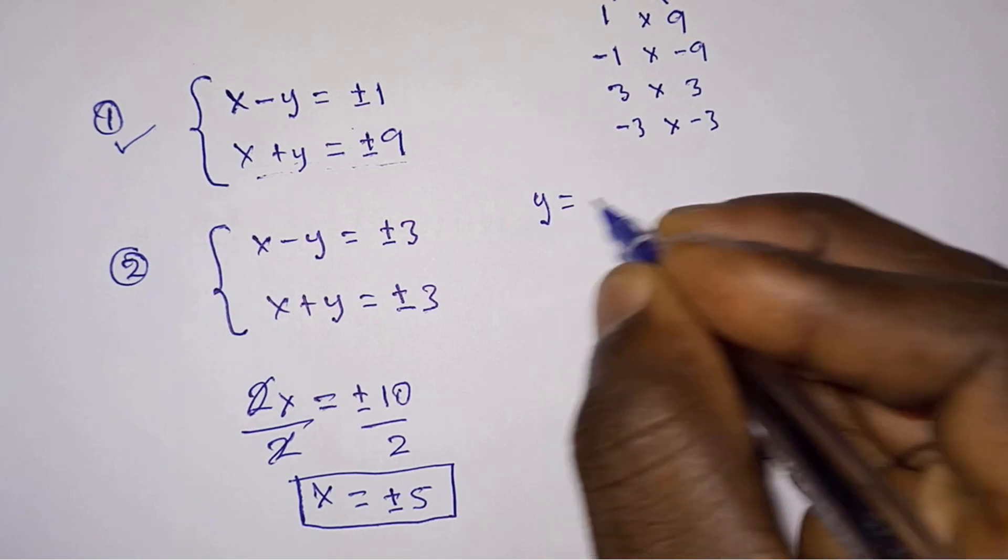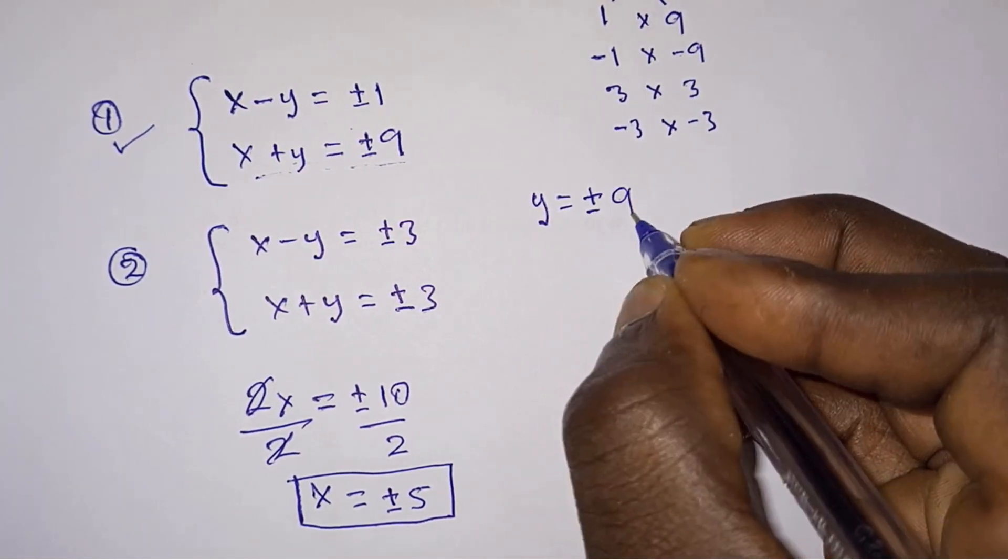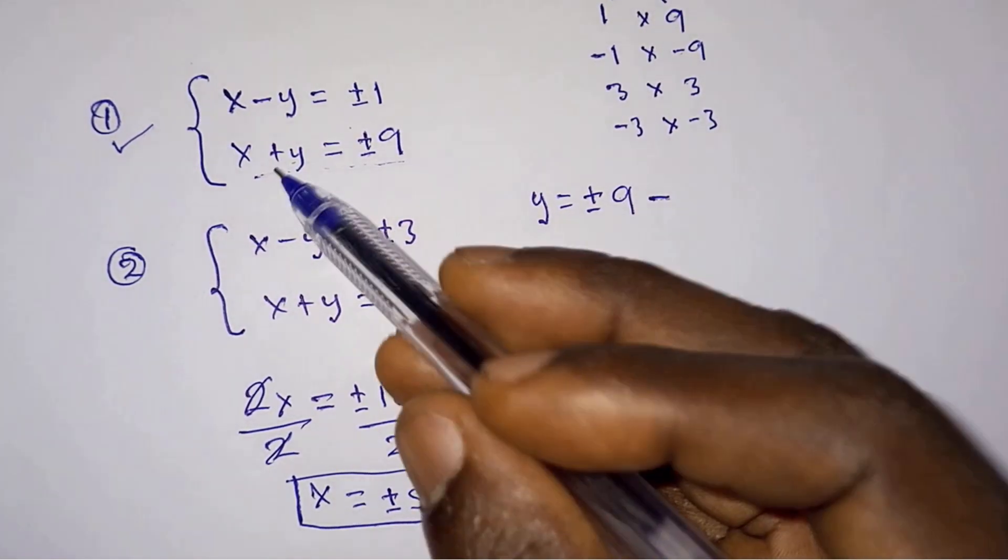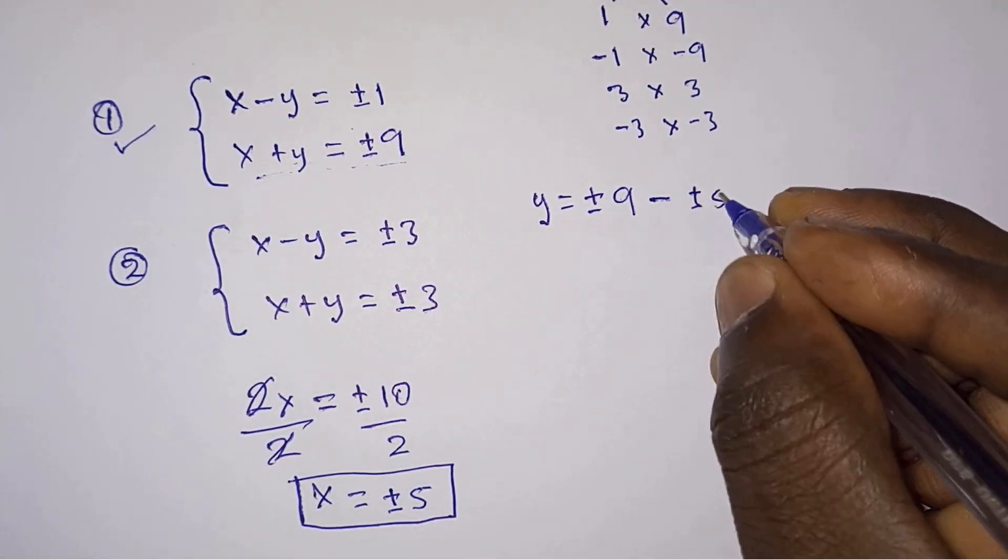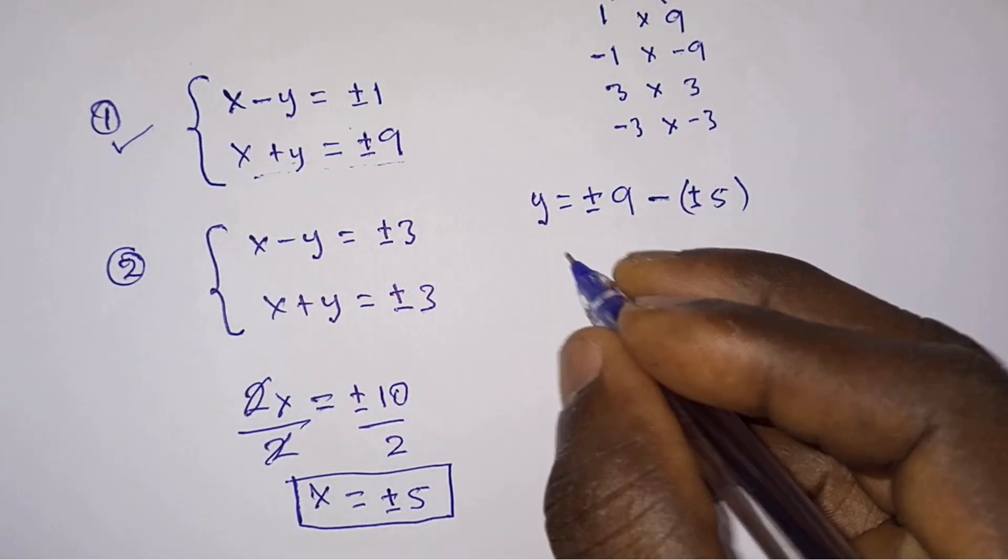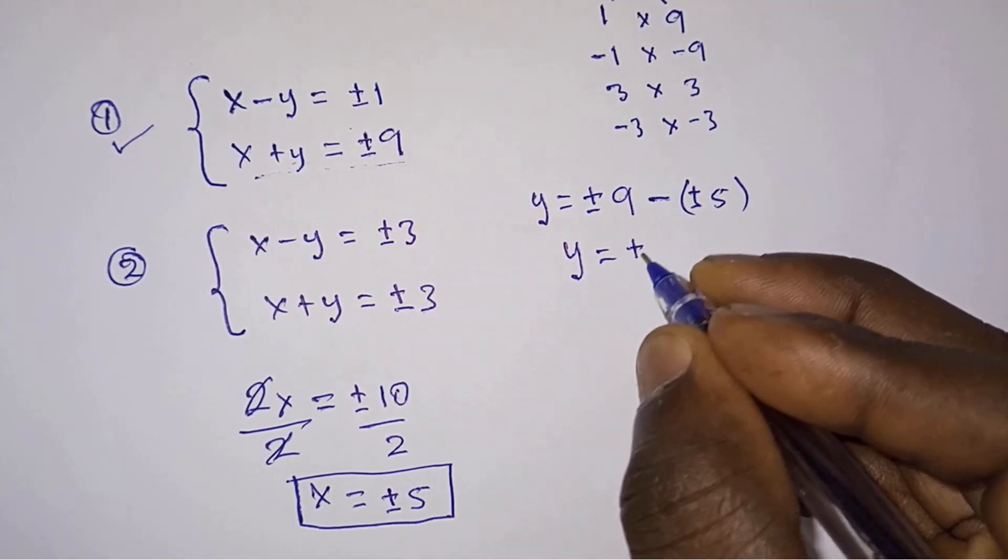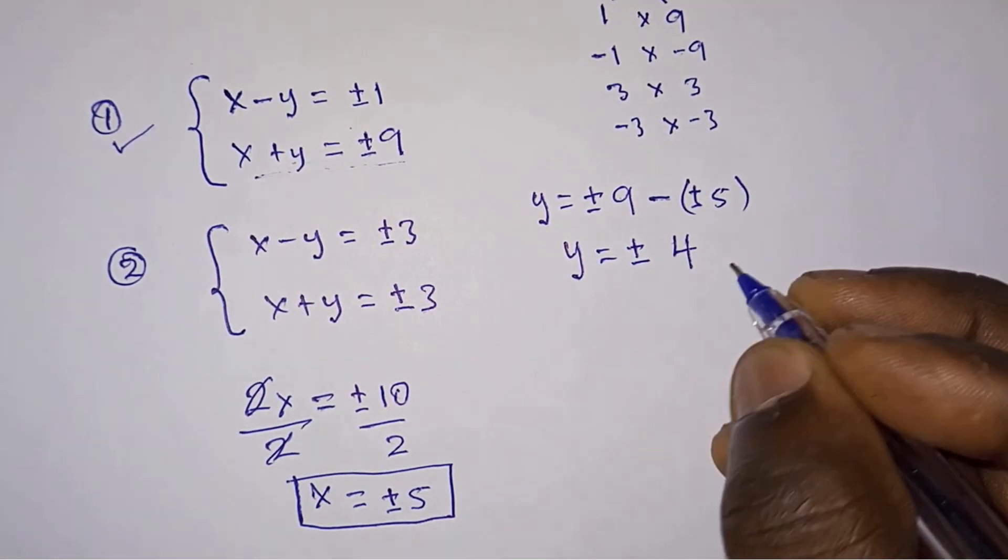Then we will put this value of x into any of these equations. I'm going for this equation. So we have y is equal to plus or minus 9 minus x. We have x to be plus or minus 5, so we have y is equal to plus or minus 4.